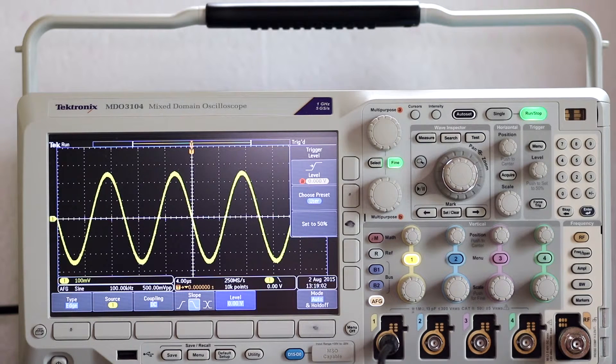Trigger holdoff is a valuable feature that is used to create a stable display when the instrument is jumping the gun, so to speak, triggering on undesired events that may be occurring in the signal.